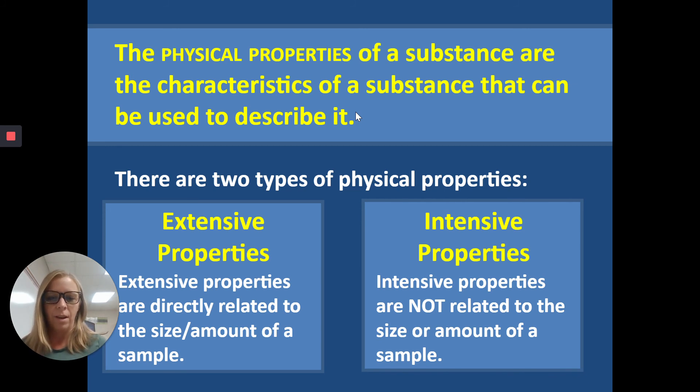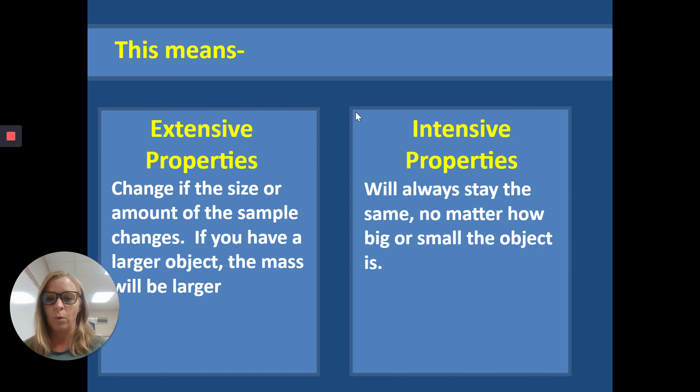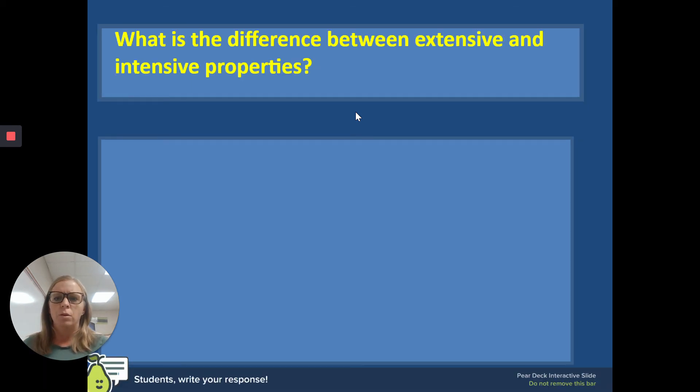We're going to start talking about physical properties. There's extensive properties and intensive properties. I'm going to focus on extensive to start with. Extensive properties is something that if you have a larger amount of it, it gets bigger, or if you have a smaller amount, it gets smaller. Intensive properties is something that stays the same no matter how much of the object you have.